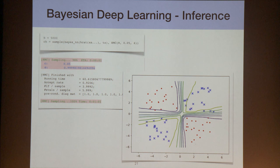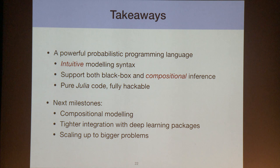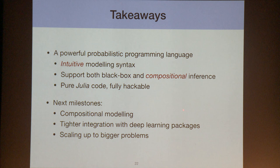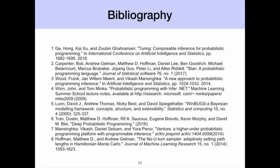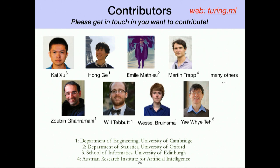To sum up, Turing is a powerful probabilistic programming language with very intuitive modeling syntax. It supports both black-box and compositional inference. Being pure Julia, it is highly hackable and works smoothly with other Julia libraries. Current focus areas include compositional modeling, tighter integration with deep learning libraries, and scaling Turing to larger problems. Turing is open source and contributions are welcome.